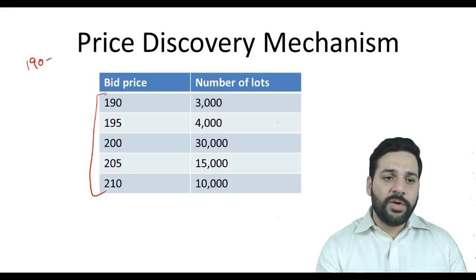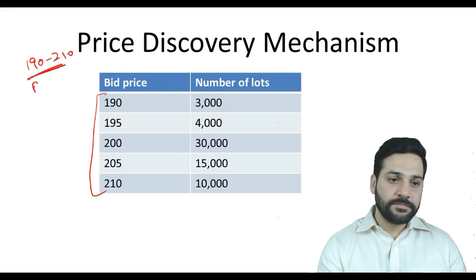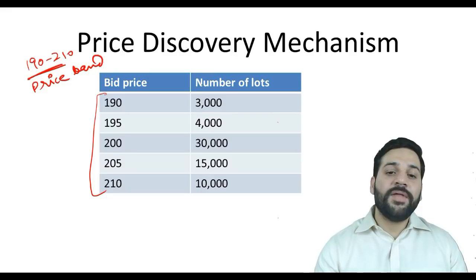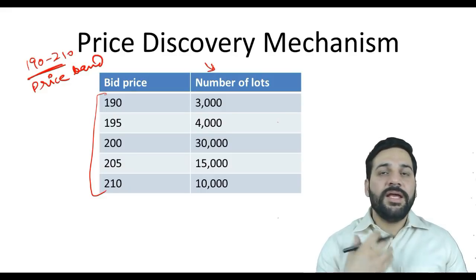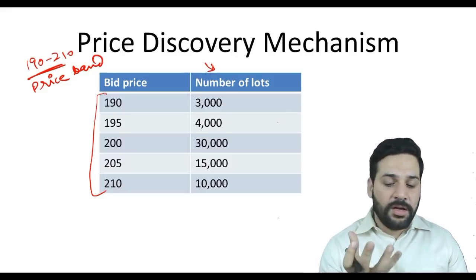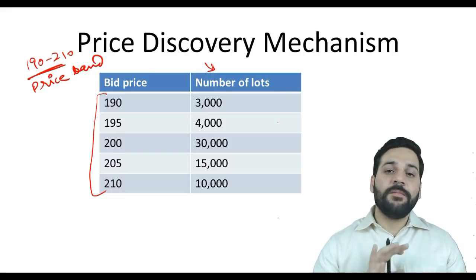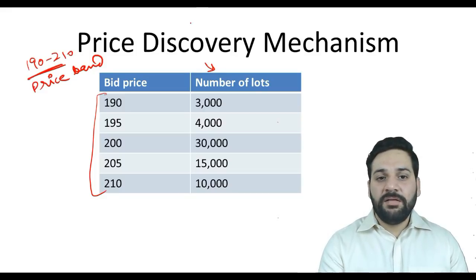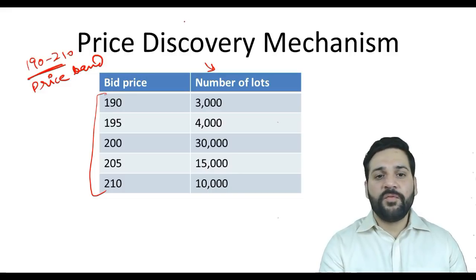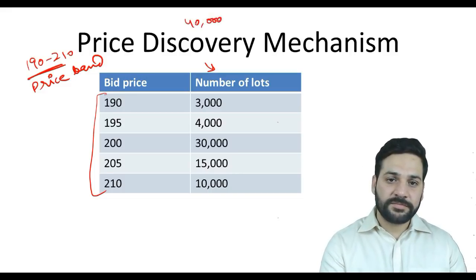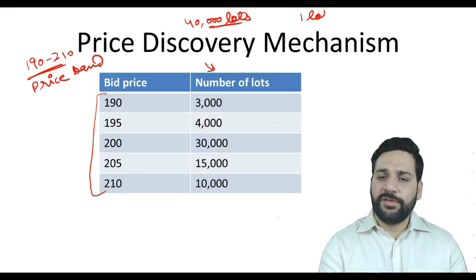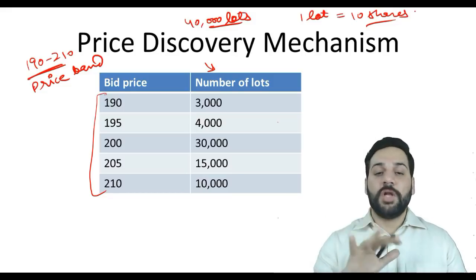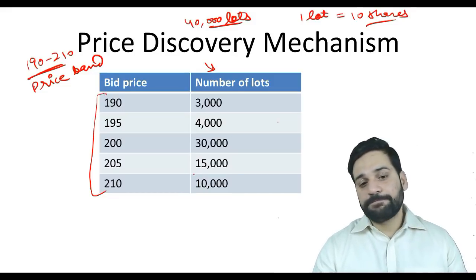Let's look at price discovery. Say the price band is 190 to 210 — 190 is the floor price and 210 is the cap. The company issues a red herring prospectus — an invitation to offer — for say 40,000 lots, where one lot equals 10 shares.